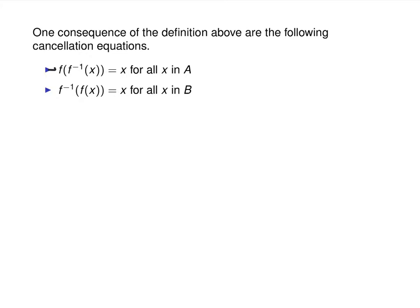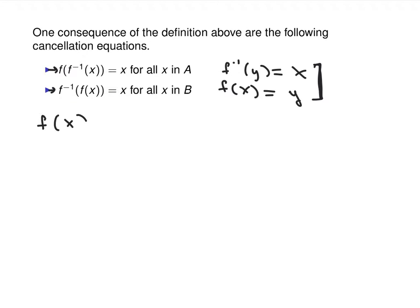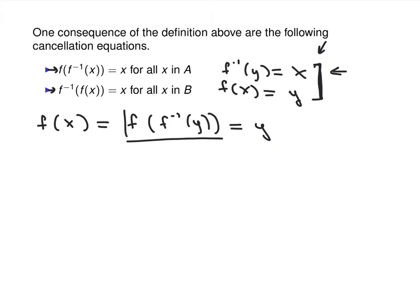One last thing about inverses: they cancel each other out. From the previous result, f inverse of y equaled x and f of x equaled y. If I take f of x, and substitute x equals f inverse of y, I get f of f inverse of y, which equals y. This is how you formally say that inverses undo each other — when you compose them, you get back to where you began.